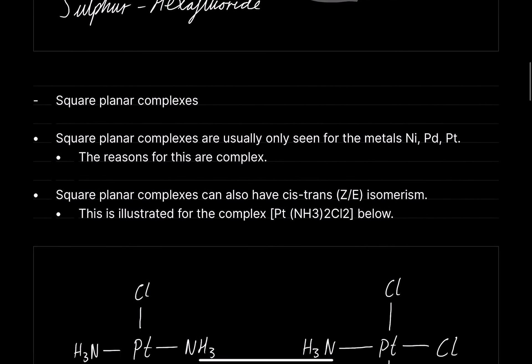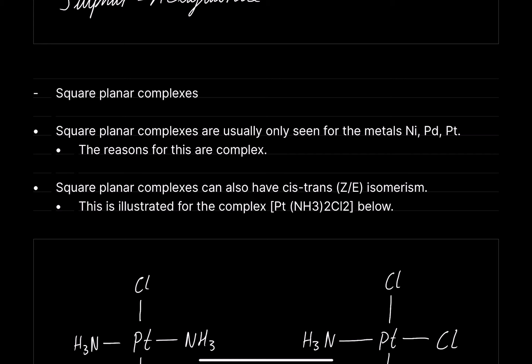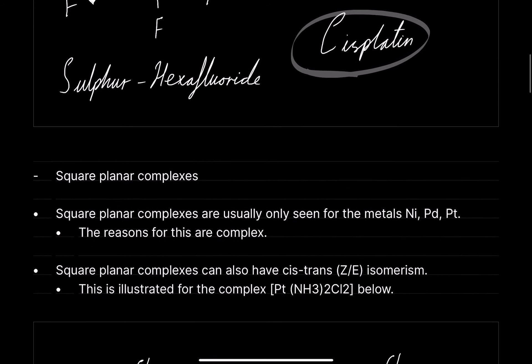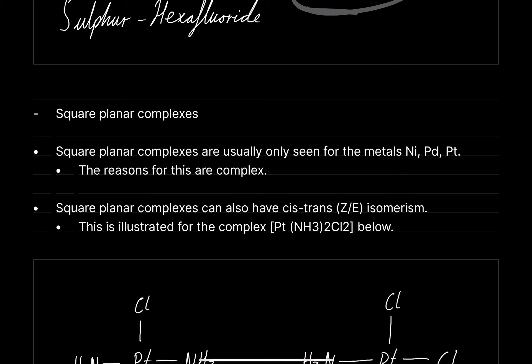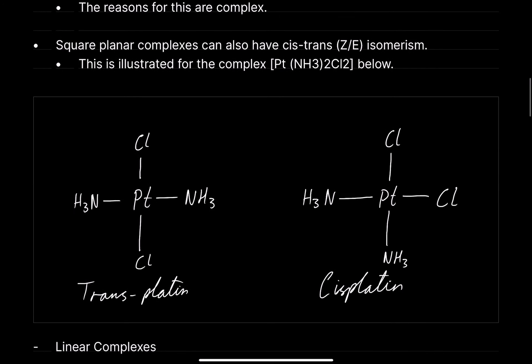Platinum(NH3)2Cl2 is cisplatin, but it can also be transplatin. If you know about geometrical isomerism — cis or trans — cis means together, which is the Z-isomerism, and transplatin would be the E-isomerism. This matters a lot because these are two completely different drugs.